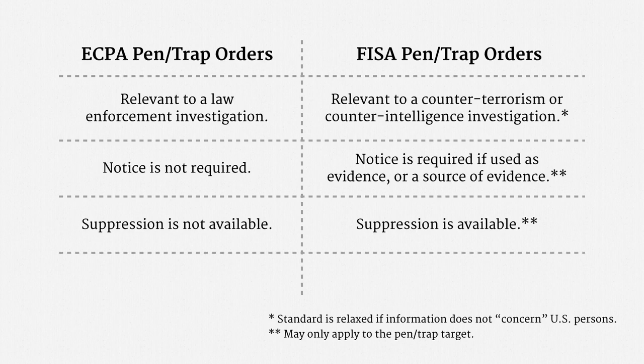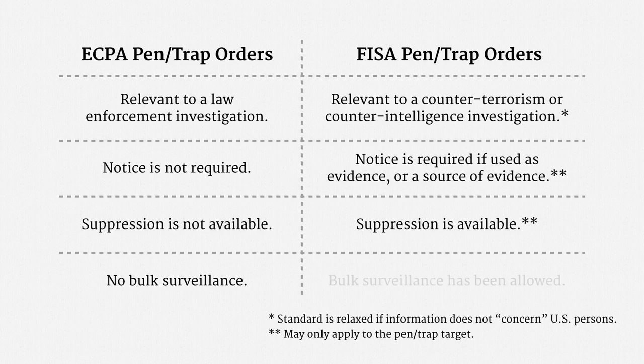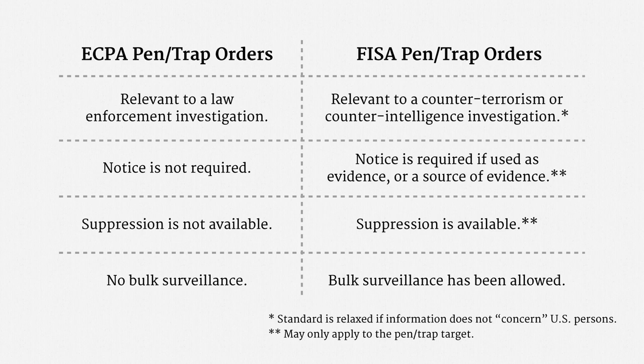Back to ECPA: no court has authorized a bulk surveillance program with the ECPA pen trap authority, and the executive branch has not claimed authority for a law enforcement bulk surveillance program using ECPA's pen trap provisions. On the FISA side, bulk surveillance actually has been allowed — the executive branch has argued for it, and the FISC has authorized it. In fact, the NSA's first court-authorized bulk domestic surveillance program was operated under FISA's pen trap provisions.